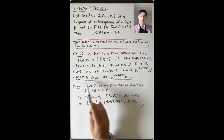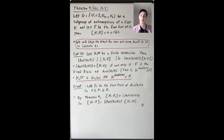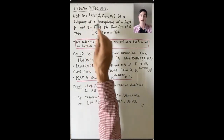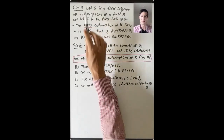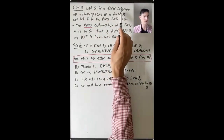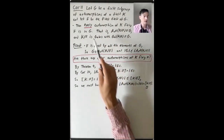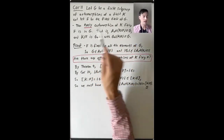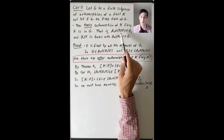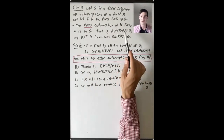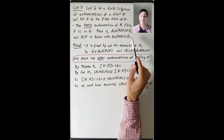This characterization is now another way to understand what it means for a finite extension to be Galois. Now let's state and prove Corollary 11, which says: let G be a finite subgroup of automorphisms of a field K and let F be the fixed field of G. Then every automorphism of K fixing F is in G — that is, G is actually equal to Aut(K/F) — and K over F is Galois, so the Galois group of K over F is G.